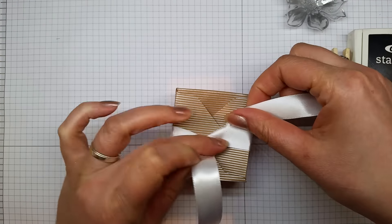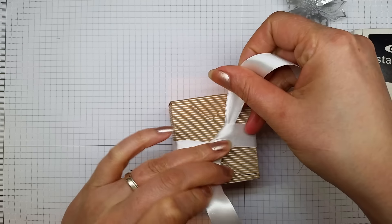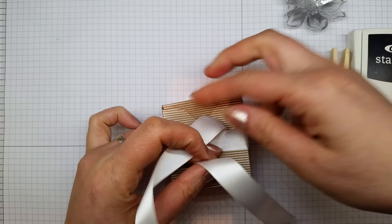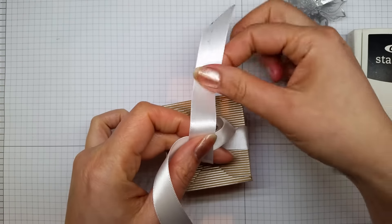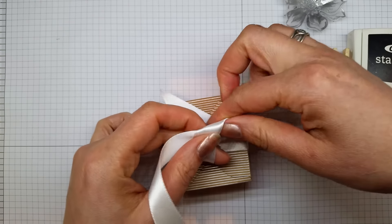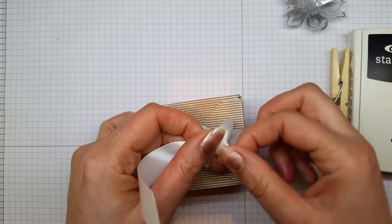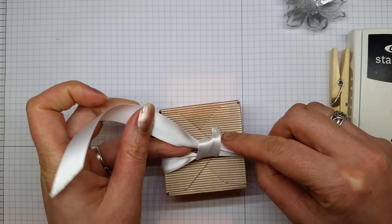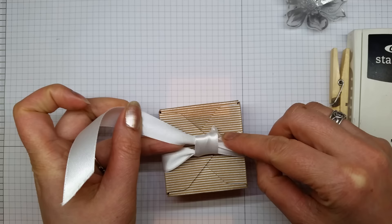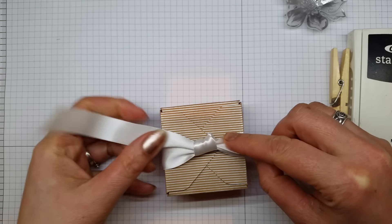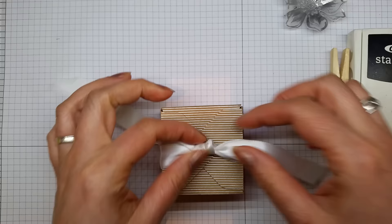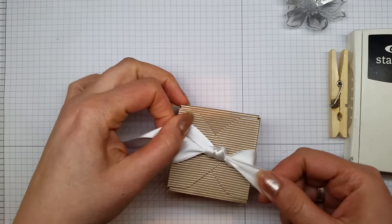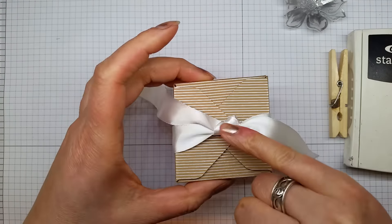Then take the left ribbon now and take that over and under the right side, and then pull the left ribbon gently so that it creates that really nice knot that you get on the top there.